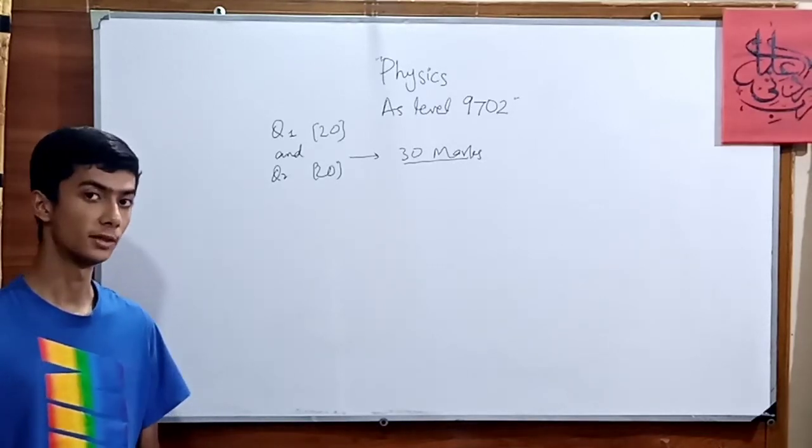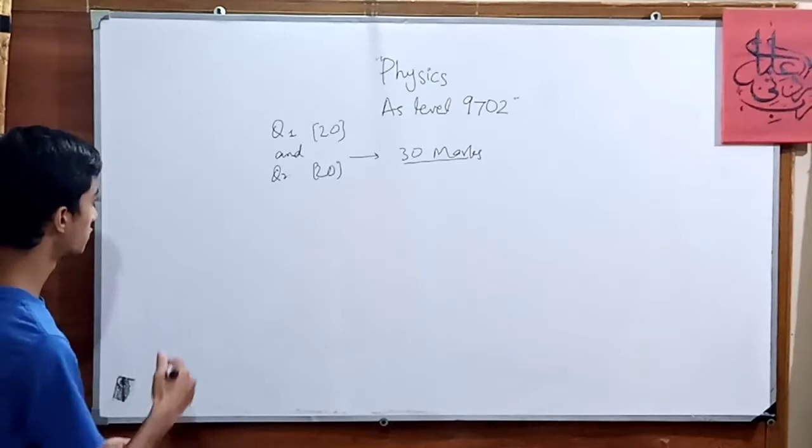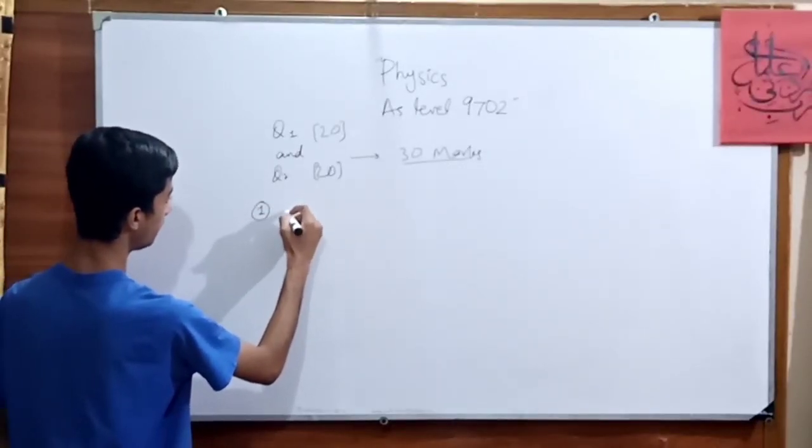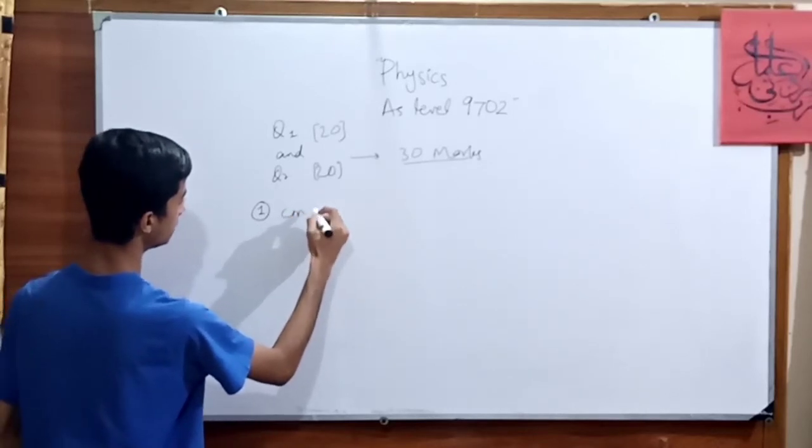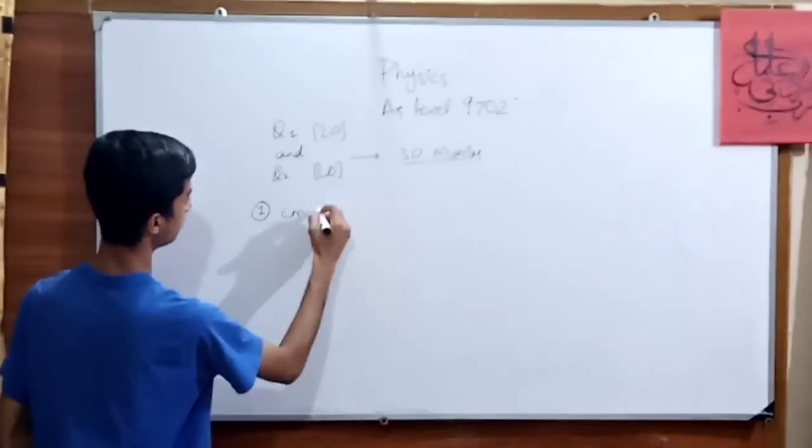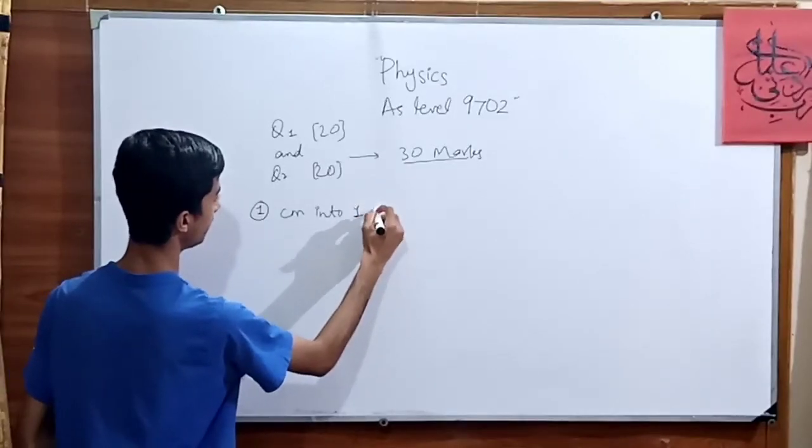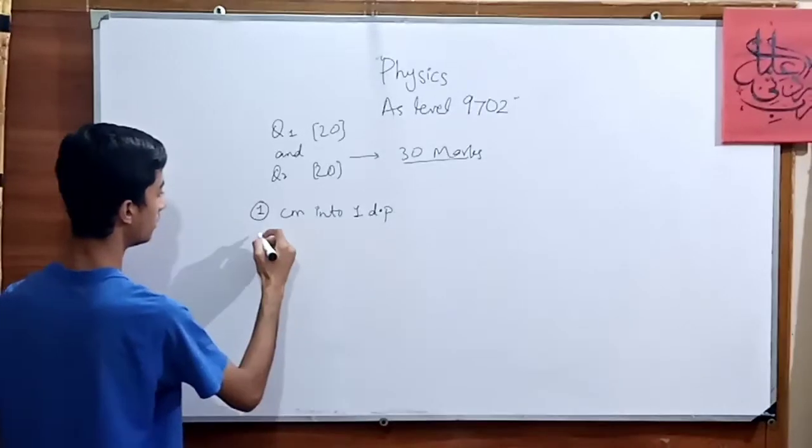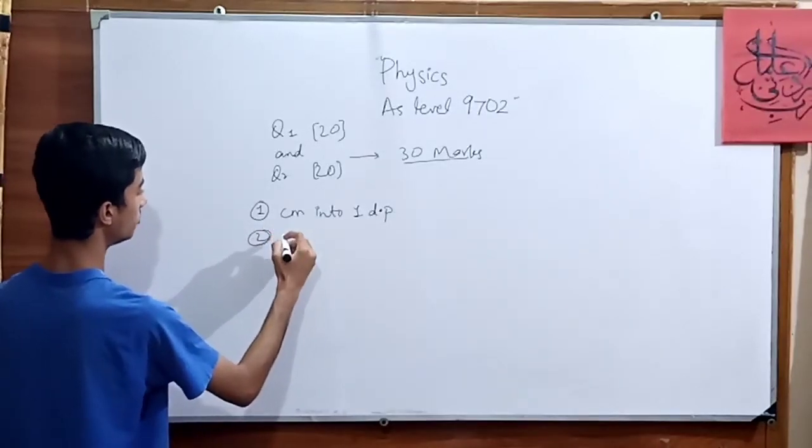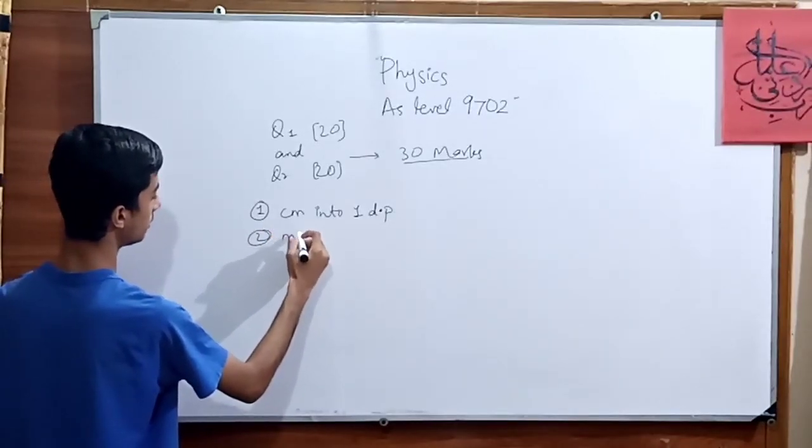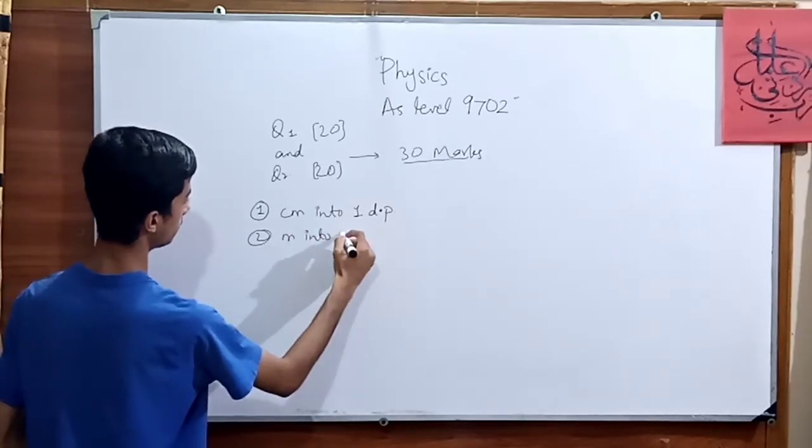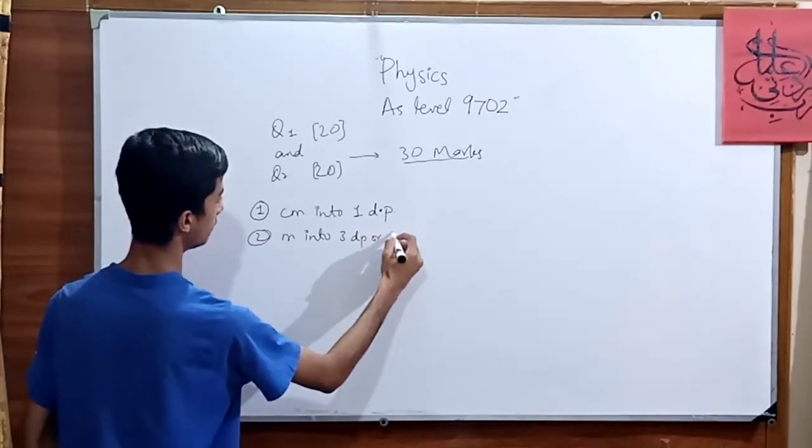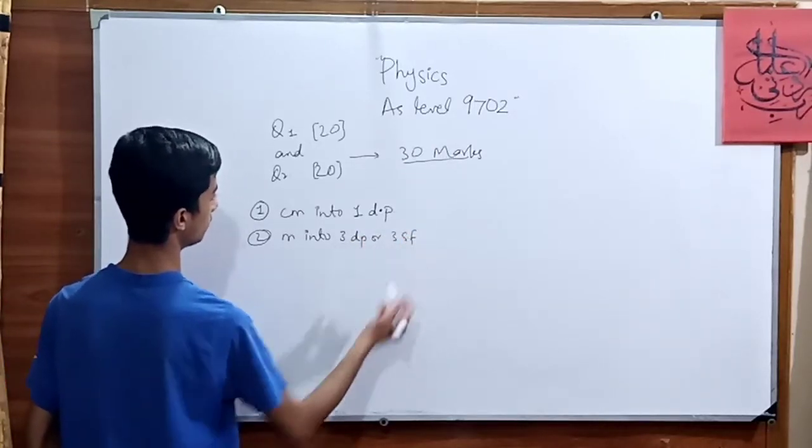I am just gonna discuss some of the few tips regarding both of the questions. First of all, tip number 1. Whenever the centimeter comes in our examination, it should be written into one decimal place, 1dp. Furthermore, if we just move on, so meter, we come into the 3dp as per the required or 3dp itself.